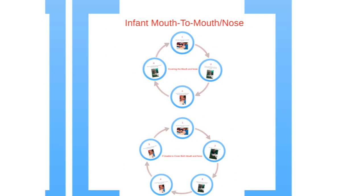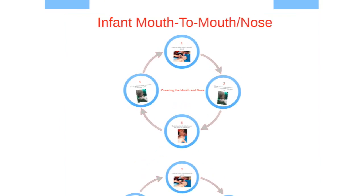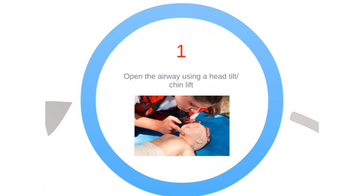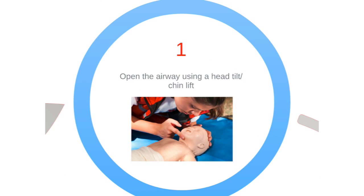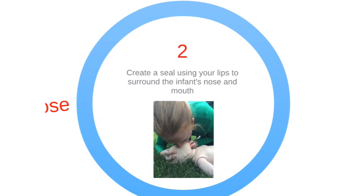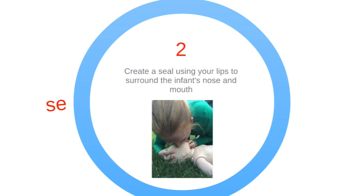There are two different approaches to mouth-to-mouth ventilation for infants. The first is being able to cover both the infant's mouth and nose with your mouth. First, open the airway with the usual head-tilt chin-lift. Now create a seal with your mouth covering both the mouth and the nose of the infant.